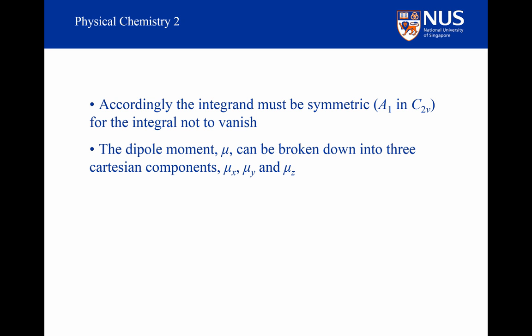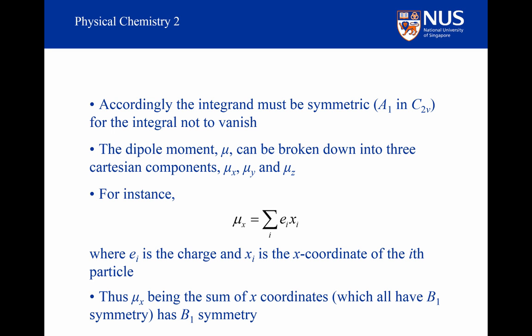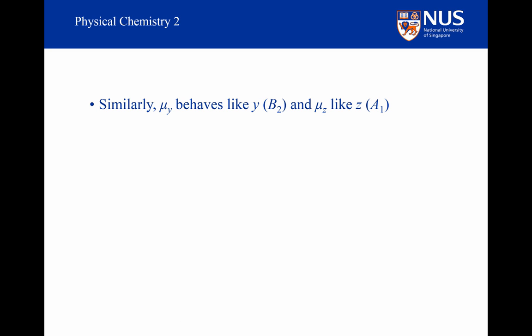The dipole moment μ can be broken down into three Cartesian components: μₓ, μᵧ, and μ_z. For instance, μₓ is equal to the sum of the charges times the x-coordinate of the charges. Thus μₓ, being the sum of x-coordinates which all have B1 symmetry, has B1 symmetry. Similarly, μᵧ behaves like y and has B2 symmetry, and μ_z behaves like z and has A1 symmetry.